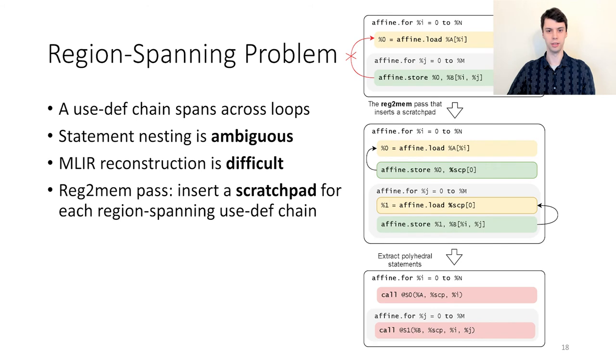One major problem we need to deal with is a use-def chain that spans multiple loops. For example, consider the code at the top where a value loaded outside a loop is used within the innermost loop. It is impossible to perfectly represent this within an OpenScop statement, since the entire statement is evaluated in one place. Our solution is a reg2mem pass. We insert scratchpad memory when a use-def chain spans across multiple loops, as shown in the middle figure. After reg2mem is run, statement extraction will create two statements.